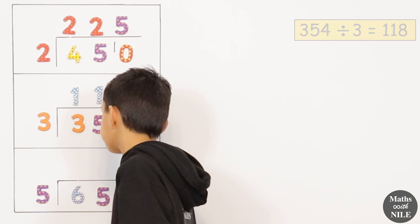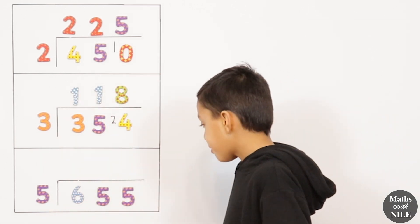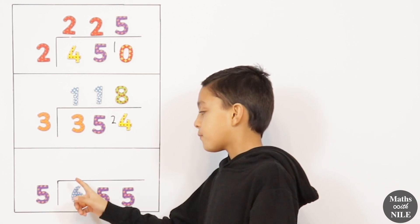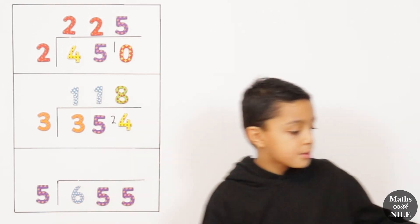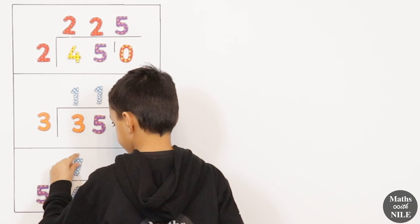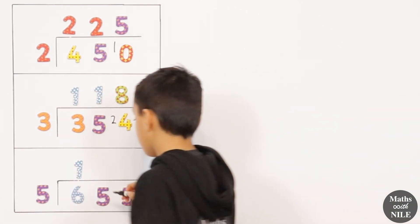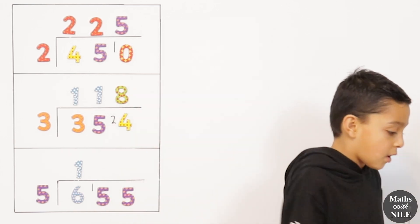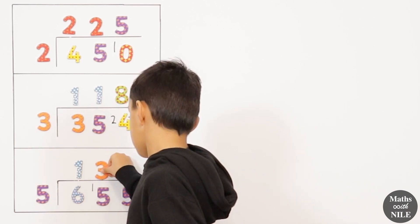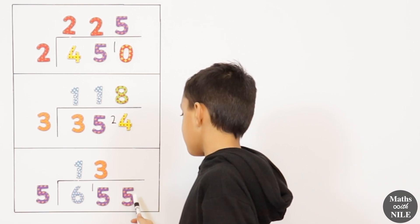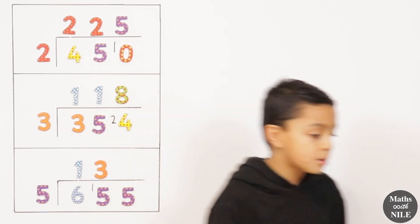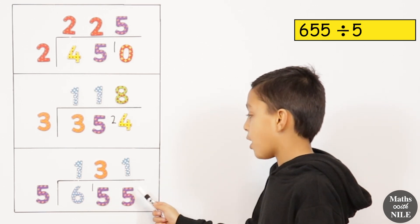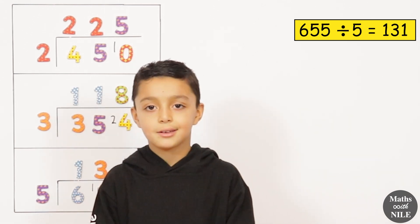Next question: 655 divided by 5. 5 goes into 6 once, so we put our 1 there, but we have a remainder of 1. So 5 goes into 15, which is 3 times. We put our 3 here. Then 5 into 5 is 1. We put our 1 there. So 655 divided by 5 equals 131.